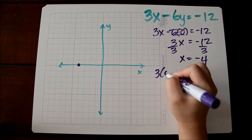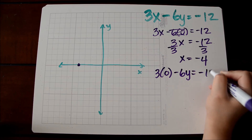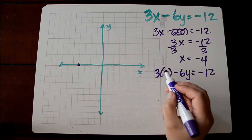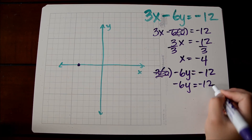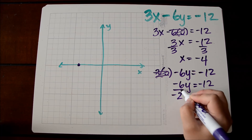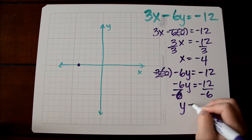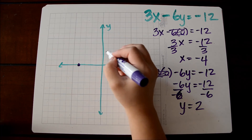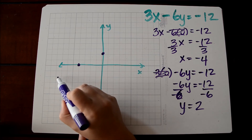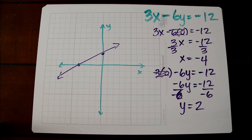Then we do the opposite to get our y-intercept — we substitute in 0 for x. Anything times 0 is 0, so we're left with negative 6y is equal to negative 12. When we divide both sides by negative 6, we get y is equal to positive 2. So we have a y-intercept at (0, 2). We connect our two intercepts, and this is the graph of our linear equation written in standard form.